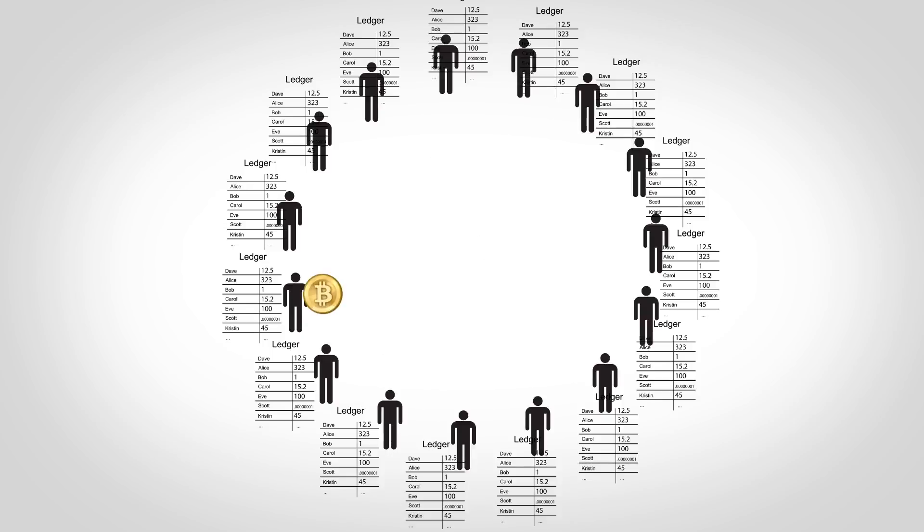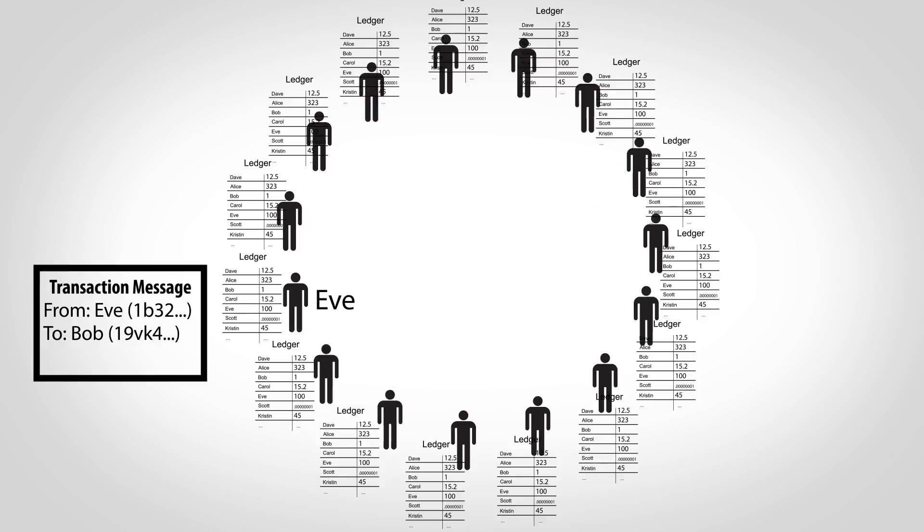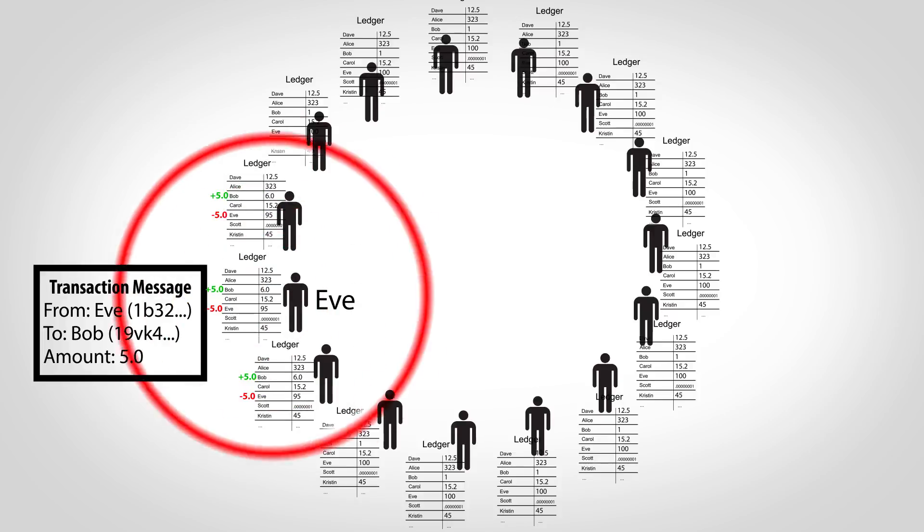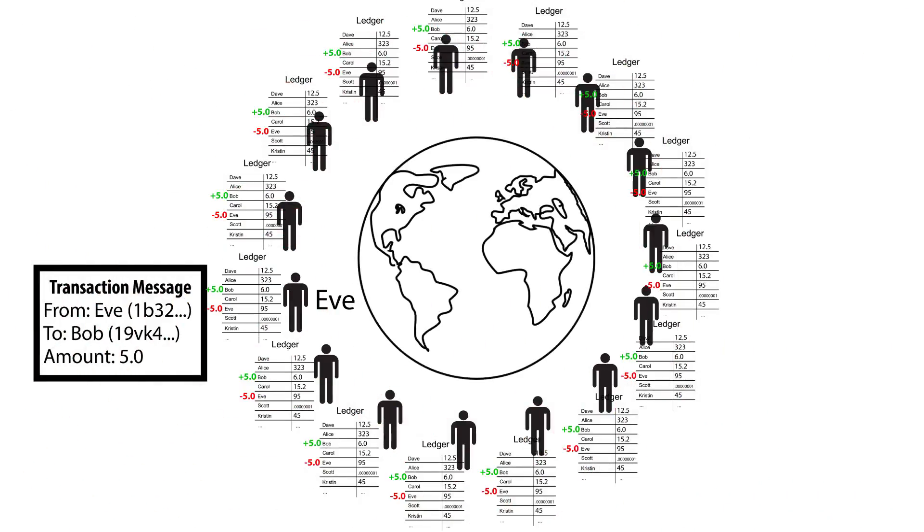If everyone maintains their own ledger, how are all the ledgers kept in sync as money is transferred? At a basic level, when you want to send money, you simply tell everyone else by broadcasting a message with your account number, the receiver's, and the amount. Everyone across the entire world then updates their ledger.